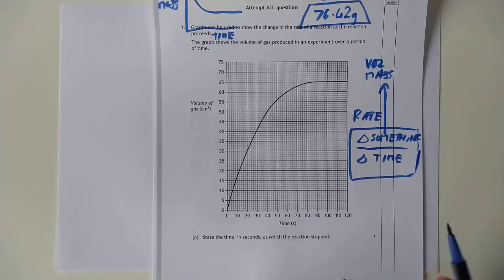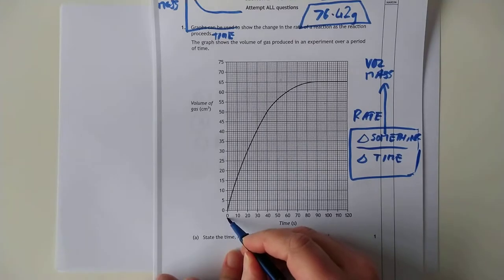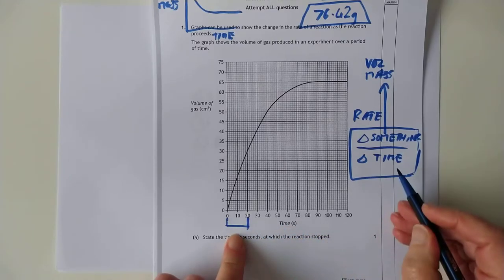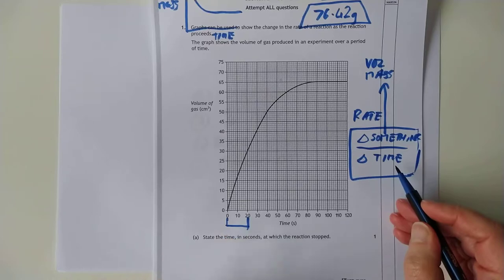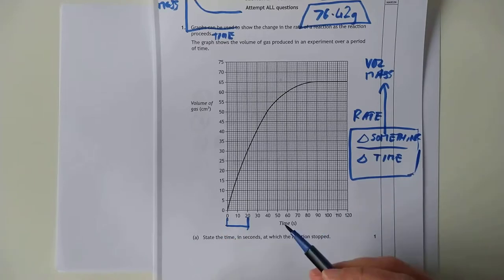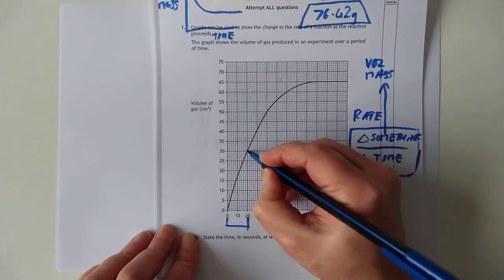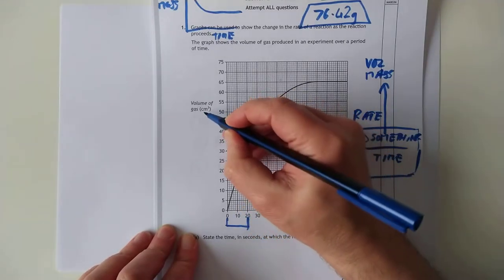The question says here, it says actually in the next part of the question, it says calculate the rate in the first 20 seconds of this reaction. So we're interested in the time period from zero. So it's the first 20. So zero to 20. That's our change in time, of course. So that's 20. What was the change in volume? Well, we started at zero volume. And when we hit 20 seconds, we're on 30 centimeters cubed.